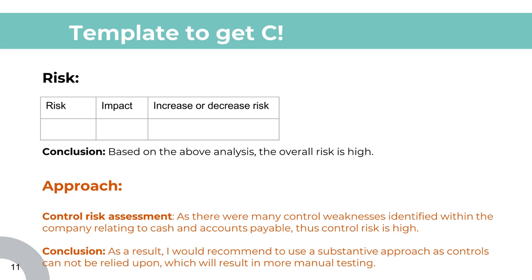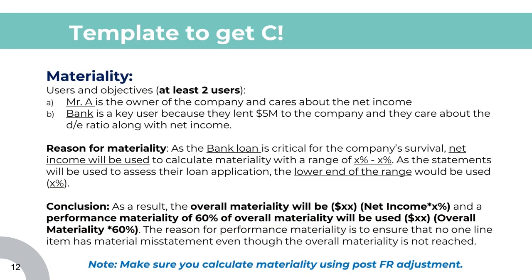In the approach section, you should spend the least amount of time writing this out because it has the least amount of AOs. The key is to talk about the control risk assessment, and then based on that, conclude whether you should do a substantive or combined test. If the case talks about how things were done and tested in prior years, you should also talk about whether it's going to be the same or different. Now let's talk about materiality — make sure you do this section after your financial reporting section, because if there are any accounting adjustments, you need to account for them before calculating your materiality.